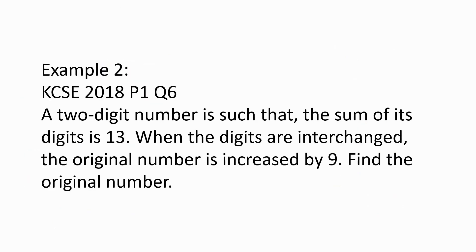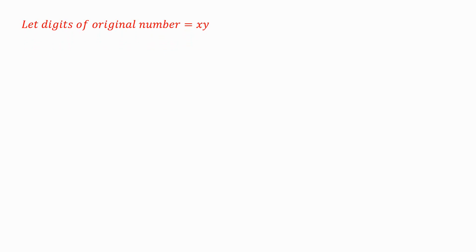Example 2, obtained from KCSE 2018 Paper 1 Question 6: a two-digit number is such that the sum of its digits is 13. When the digits are interchanged, the original number is increased by 9. Find the original number. Just like in Example 1, we shall let the digits of the original number be XY and apply the place value of the digits to form the original number.